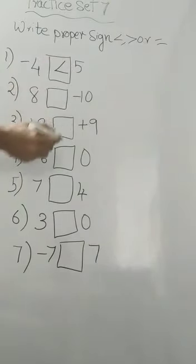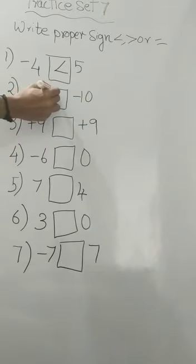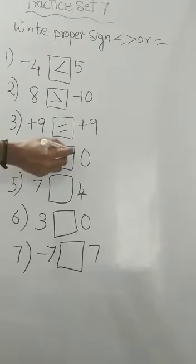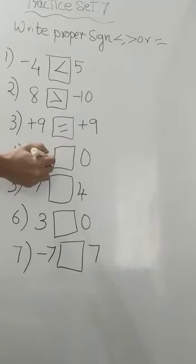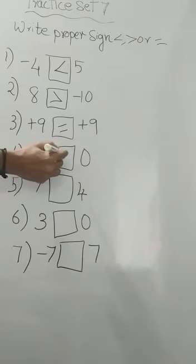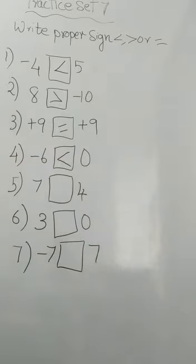Next, 8 and minus 10. Here also, the positive will be greater, 8 will be greater. Now, plus 9 and plus 9, they are equal. Now, minus 6 and 0. All negative numbers are less than 0. They come on the left side of the number line, right? So 0 will be greater than minus 6.